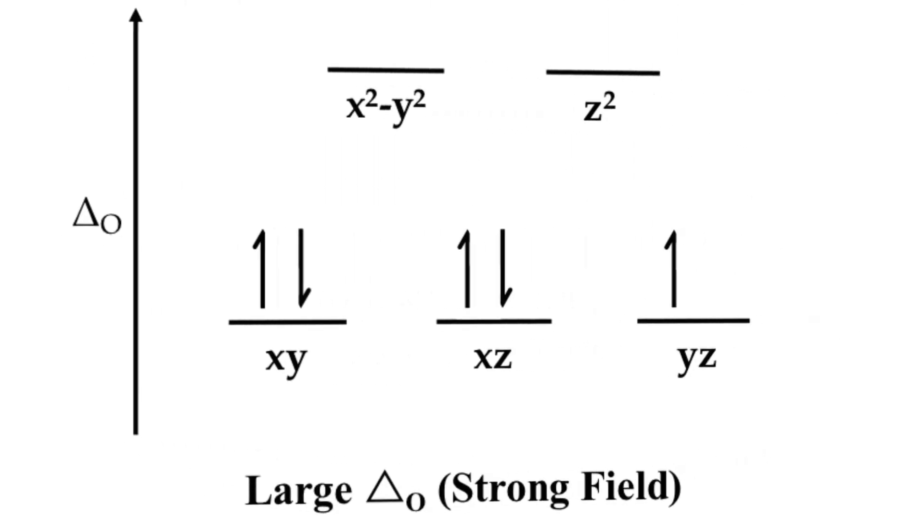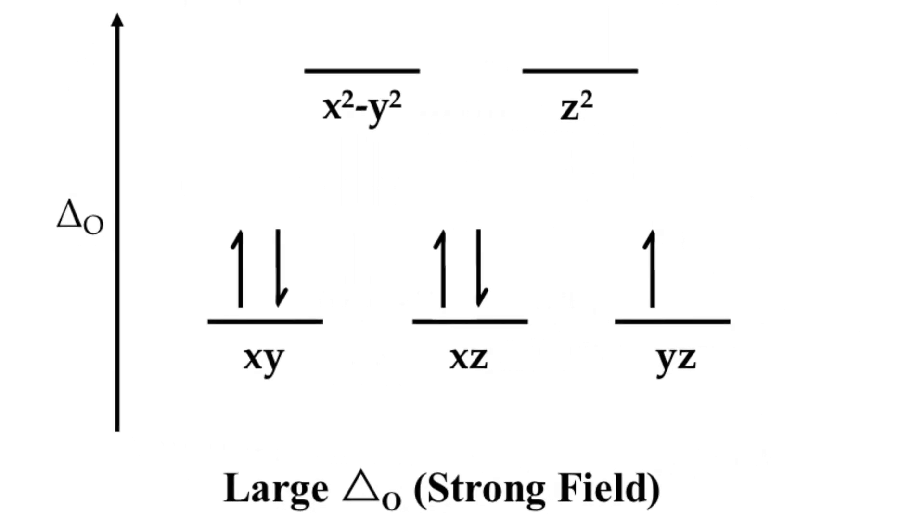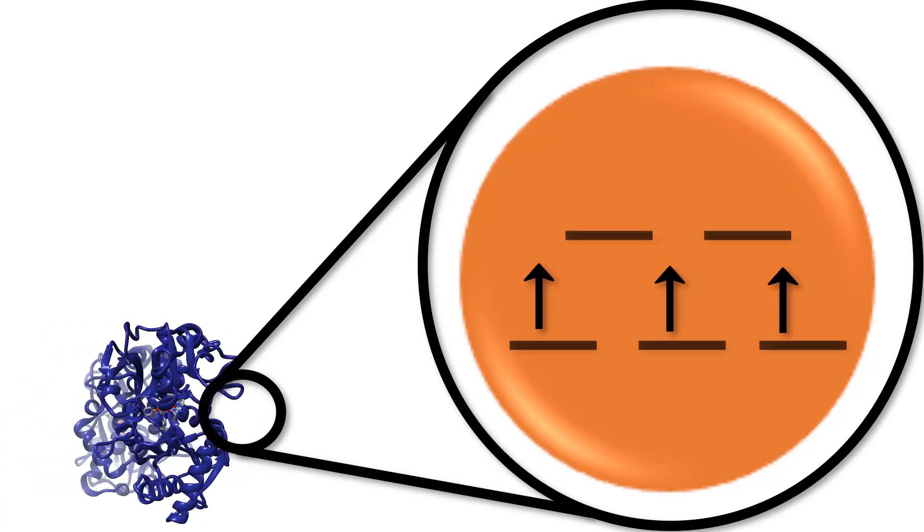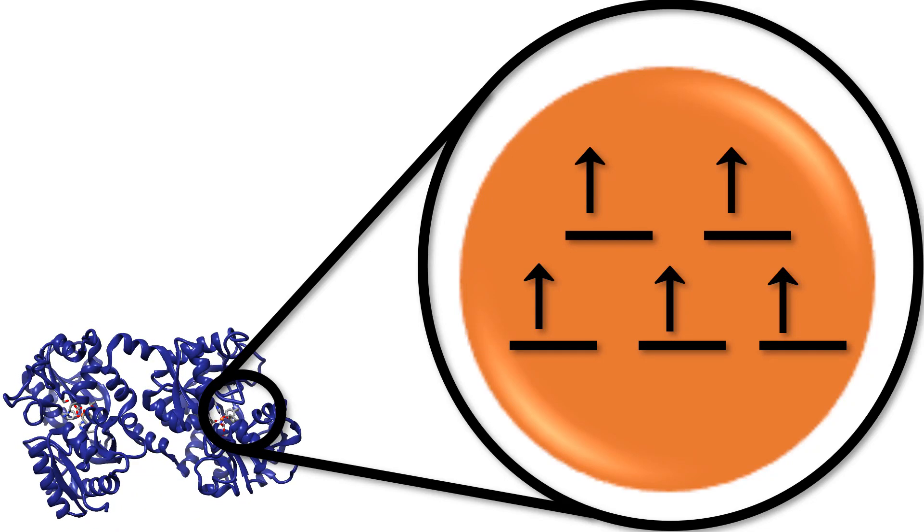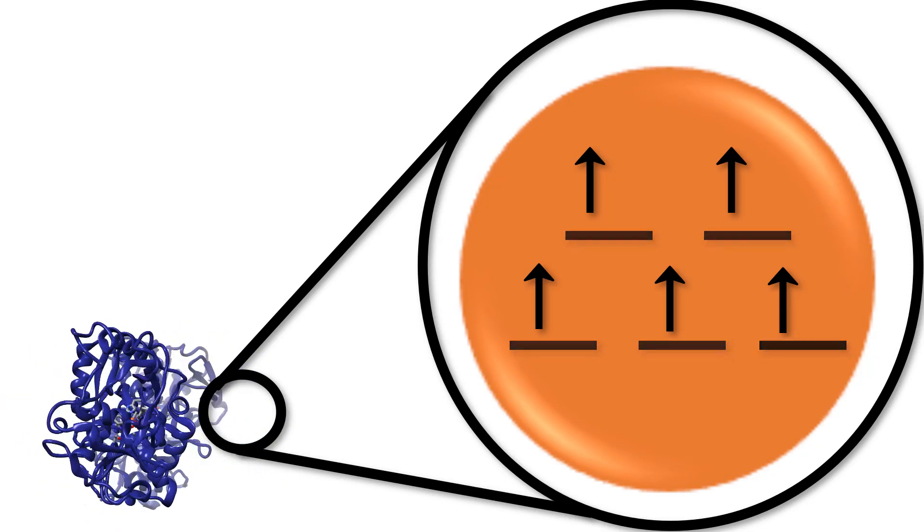On the other hand, when this difference is large, the system has a strong field and the electrons are low spin, so they will pair up before occupying a higher orbital. When bound to lactoferrin, iron 3 has a weak field, so its d-electrons will occupy the higher energy orbitals and won't pair up.